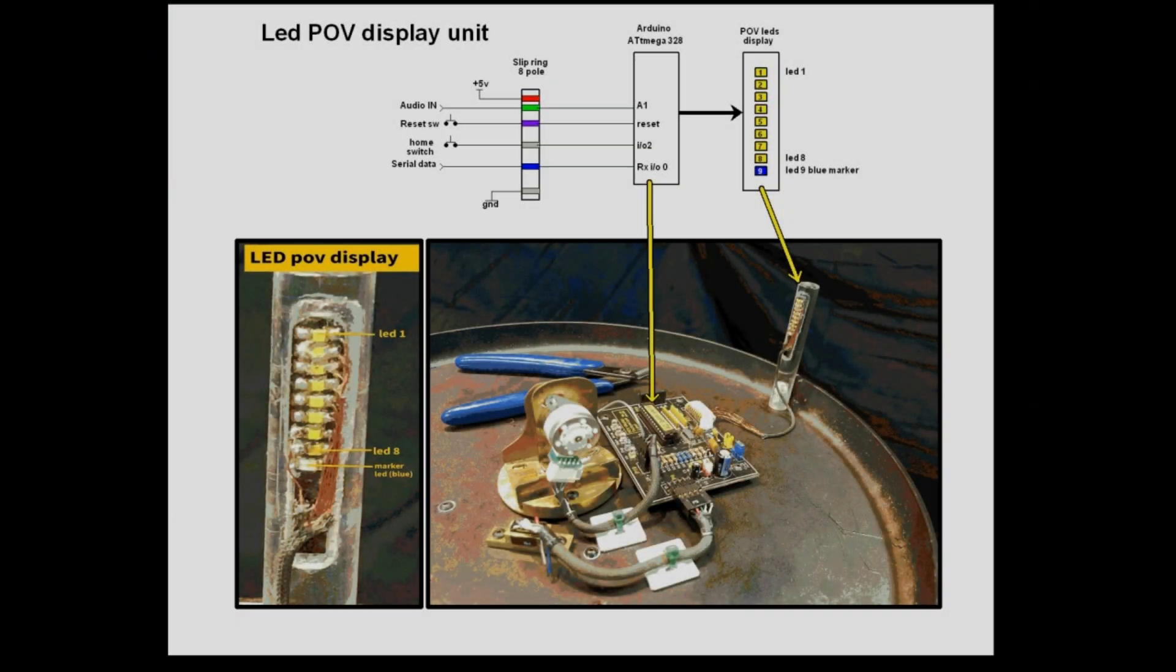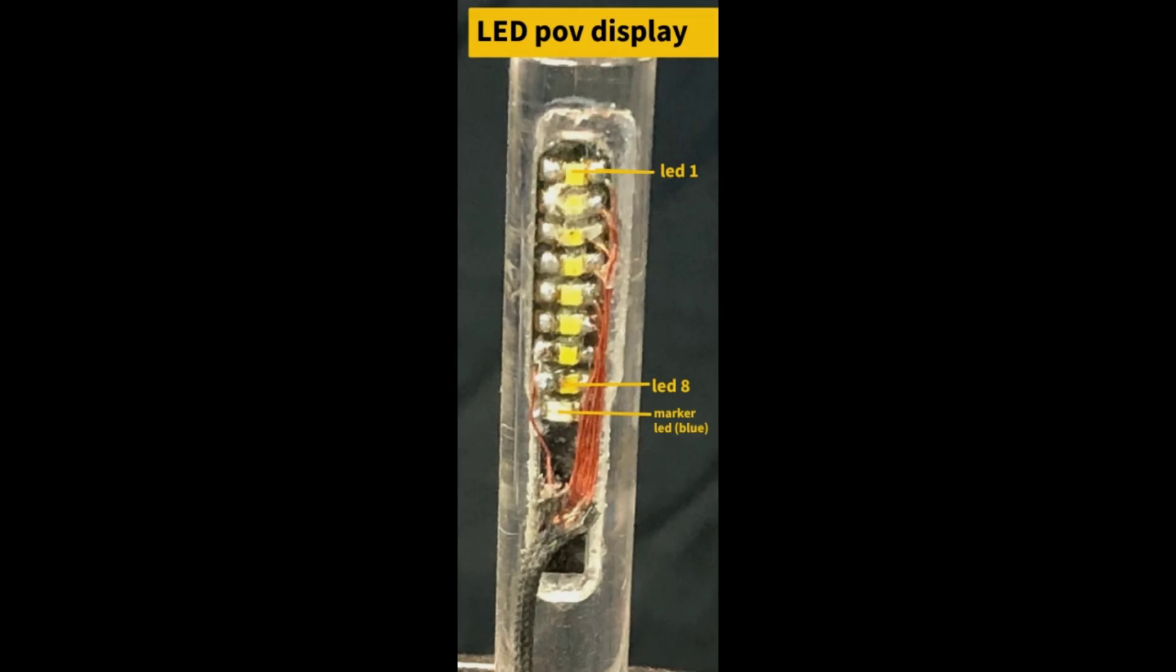The spectrum analyzer is made up of eight white LEDs and one blue LED at the bottom. You can see that in the diagram here on the first page, and it's controlled via an Arduino Mega 328.